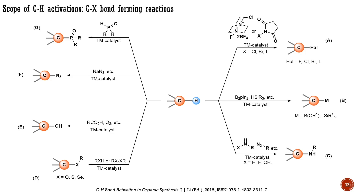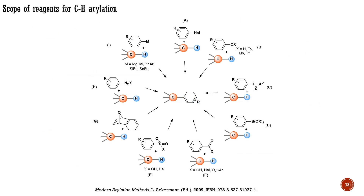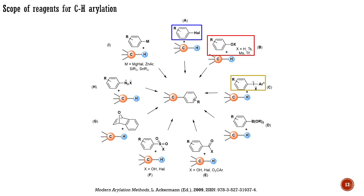I want to briefly describe the range of reagents suitable for a given CH transformation, to give you an idea of the amount of work done in CH activation within the last few years. The scope of reagents suitable for CH arylation is presented here. The most popular reagents are aryl halides. Additionally, CH arylation can be accomplished using derivatives of phenol, iodonium salts, aryl organometallics such as boronic acids and organosilicon reagents, as well as derivatives of carboxylic acid and sulfonic acid, among others.